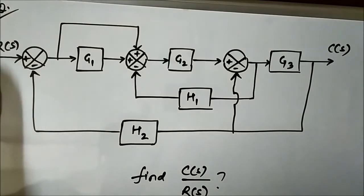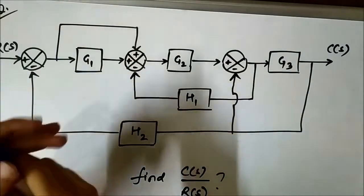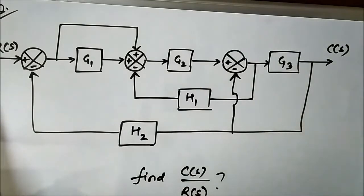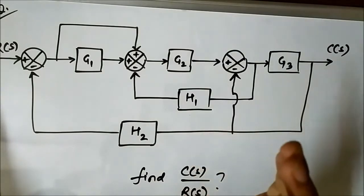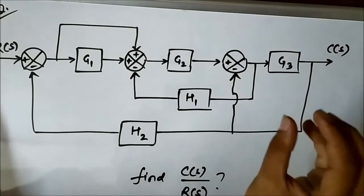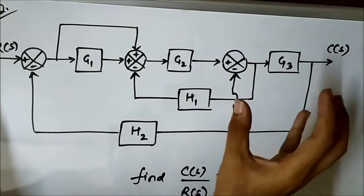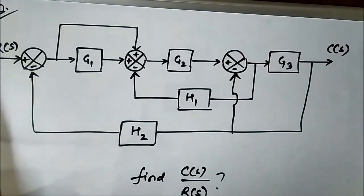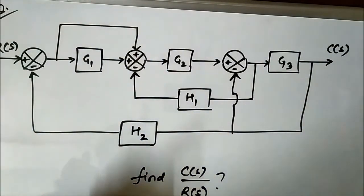As stated while solving the previous two questions, you have to find a point — pick a spot — where you can apply the block diagram reduction rules. In order to do that you have to be crystal clear about how to apply those rules, and you have to apply them in a way that minimizes the task of block diagram reduction.